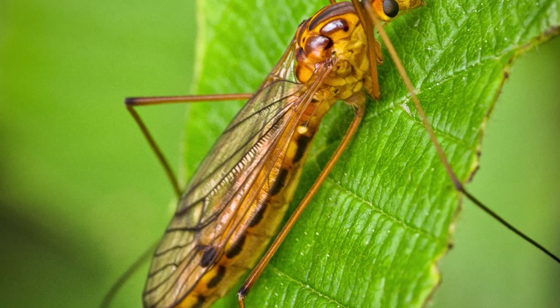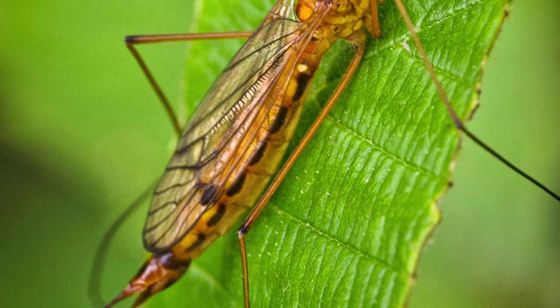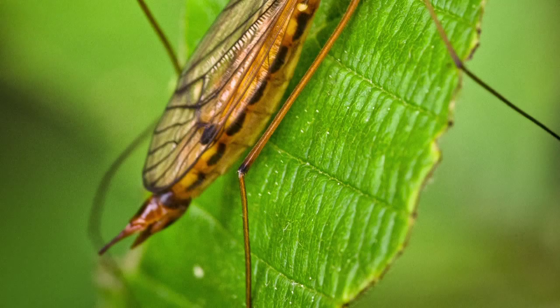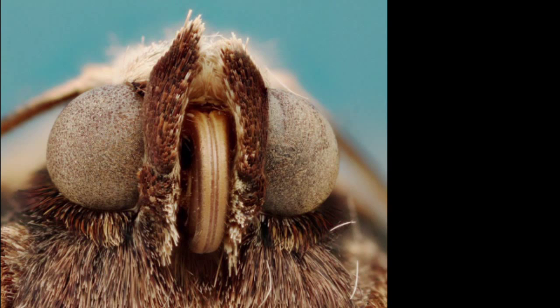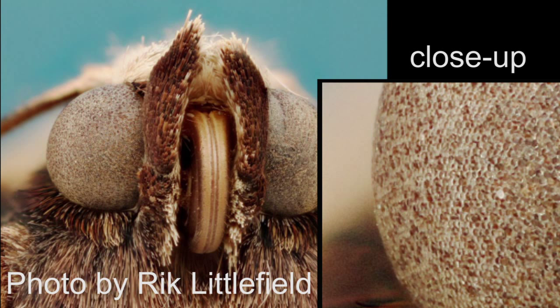Then there's another category called photomicrography, which really refers to microscope-level stuff — technical macro photography at one-to-one ratio or greater. Here's an example: an image of the head of a large yellow underwing moth, taken by Rick Littlefield, the author of Zerene Stacker, the focus stacking software I use. He used a lens with 3.5 times magnification, slightly cropped to about five millimeters wide, consisting of 59 frames, and it was taken on an automated focusing rail.